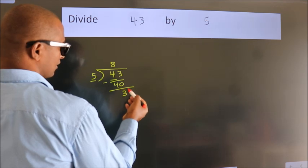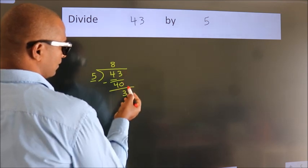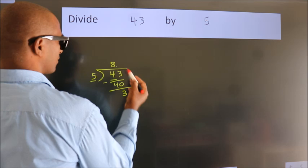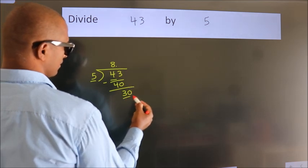After this, no more numbers to bring down. So what we do is we put a dot and take 0. So 30.